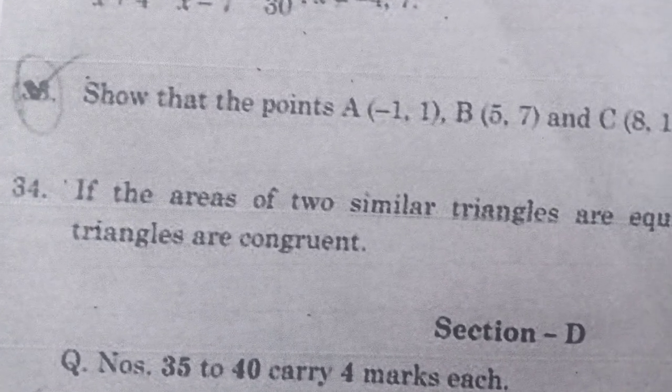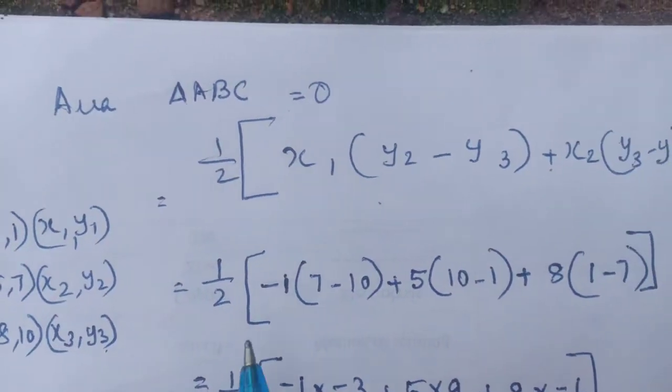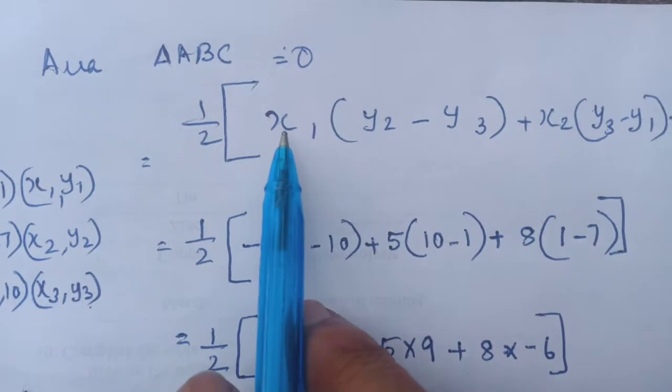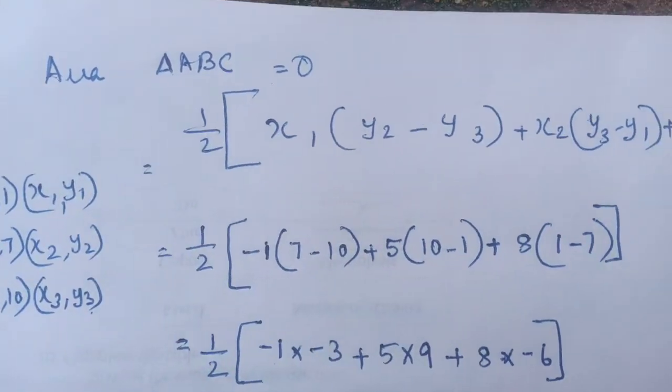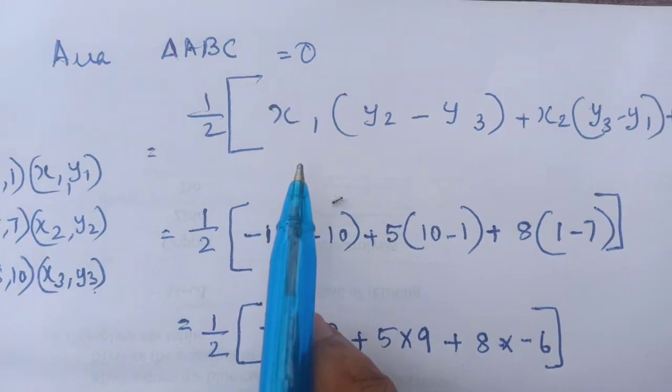For that we have to prove one equation. We have to prove this equation, that is area of the triangle ABC equal to 0. If the points are collinear, this equation will be 0.